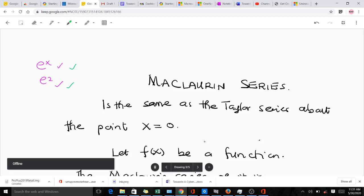One thing you have to know is that the Maclaurin series is the same as the Taylor series which has been expanded about the point x equals zero, meaning that in our Maclaurin series, always our x naught is equal to zero.